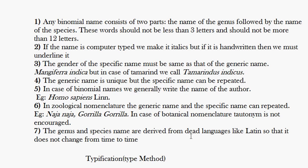For example, in the animal kingdom: Homo sapiens sapiens is the scientific name for modern man. Here, Homo sapiens is the genus and species, and the third 'sapiens' refers to the subspecies it belongs to. So the species name is sapiens and the subspecies name is also sapiens.